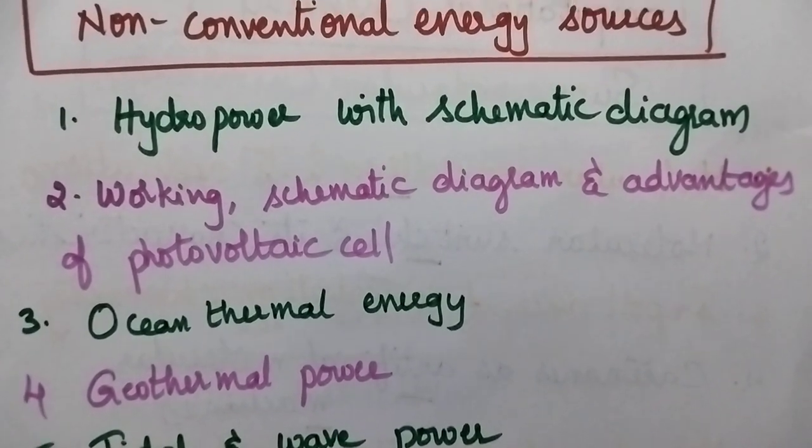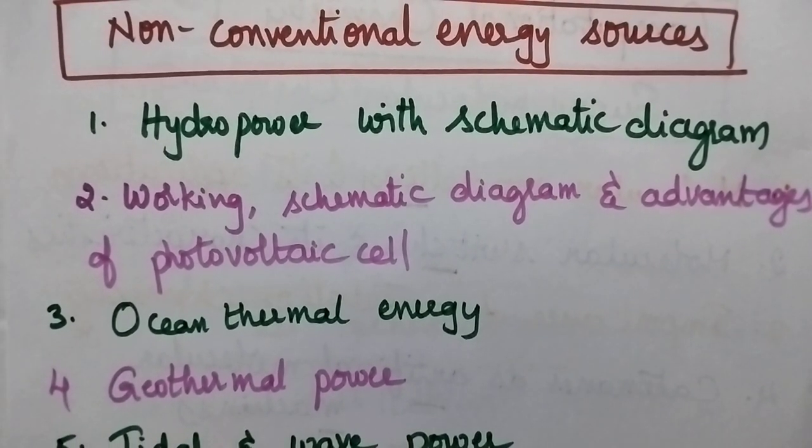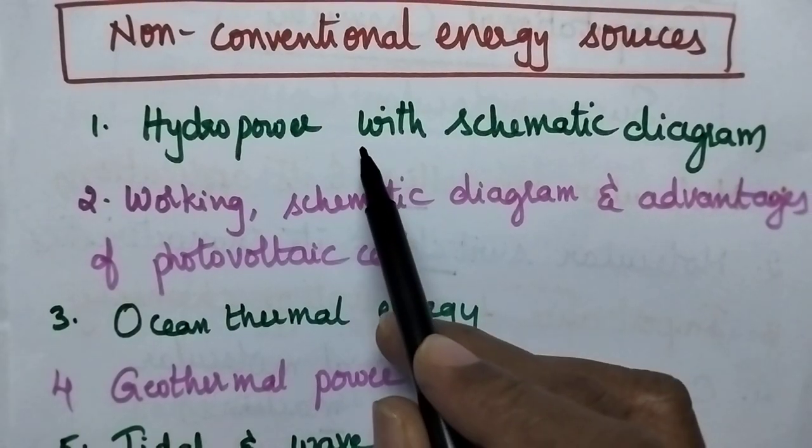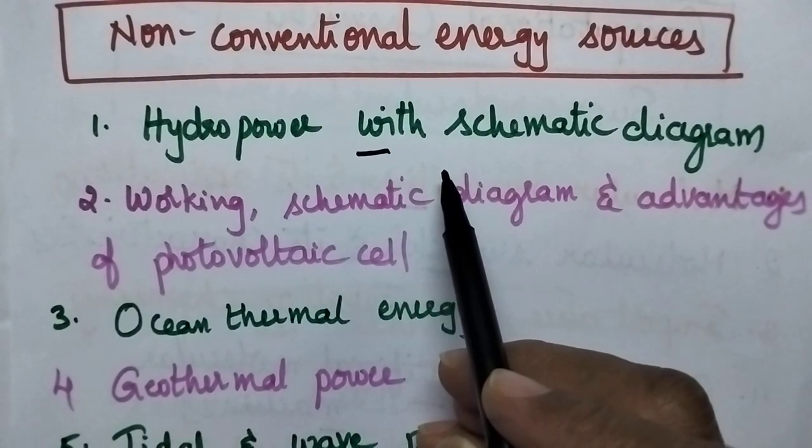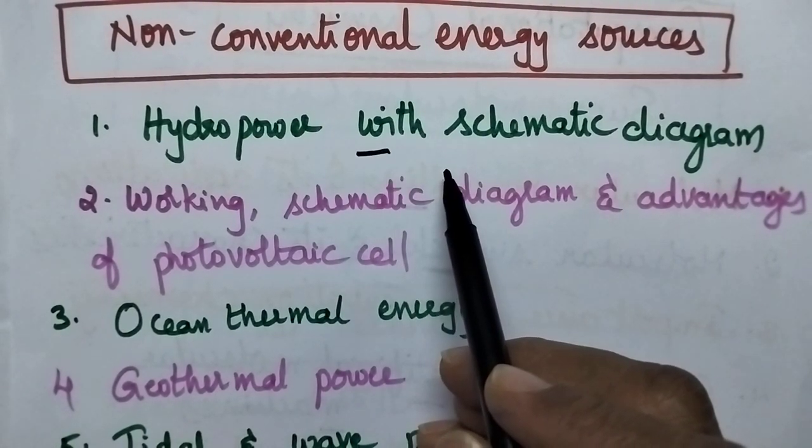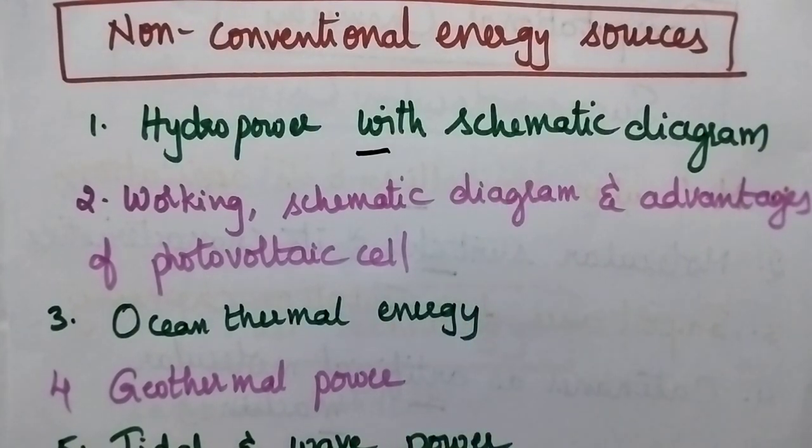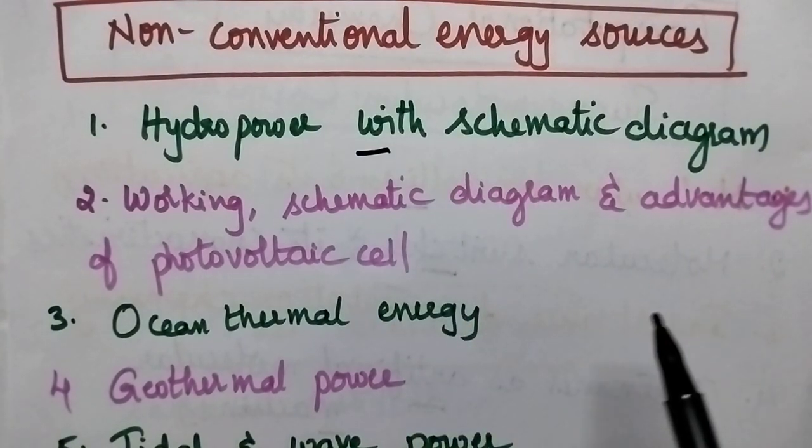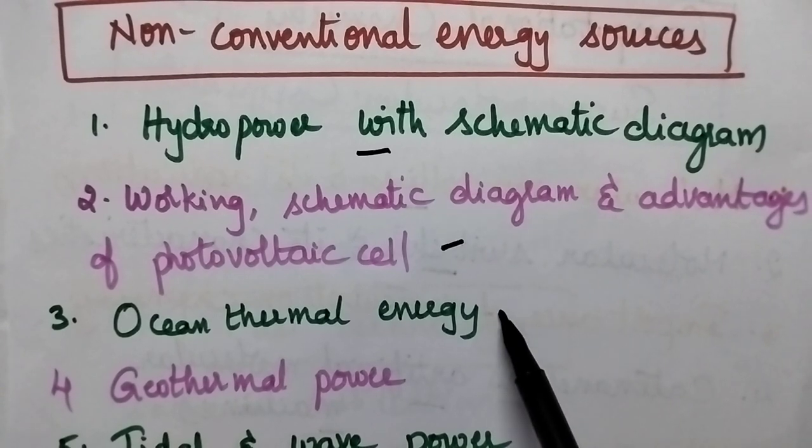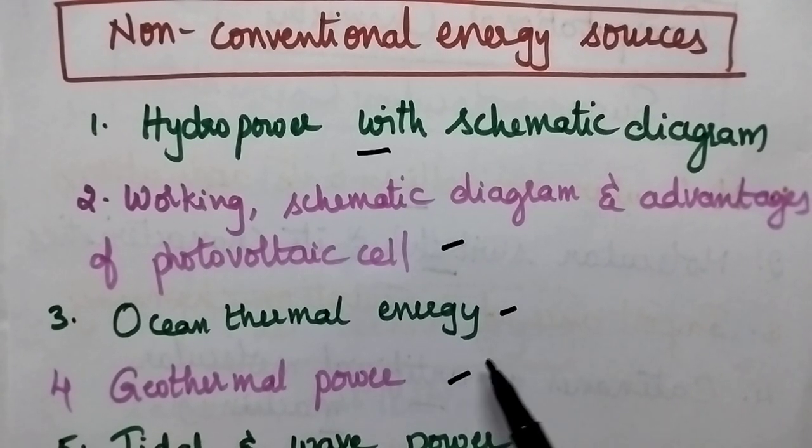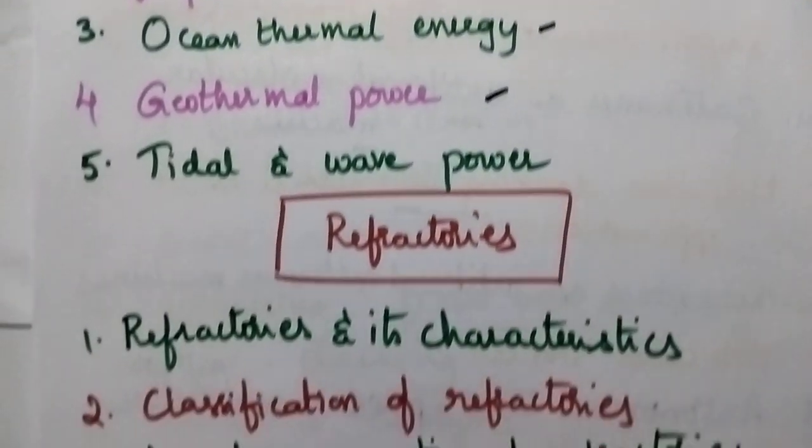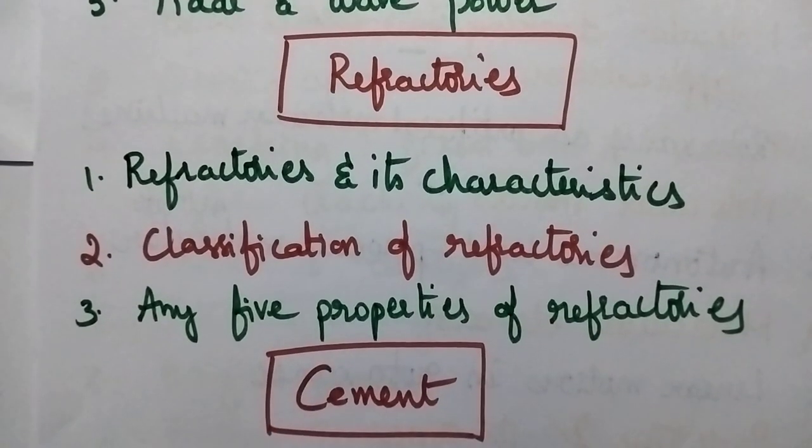Coming to the non-conventional energy sources, it includes hydropower, working advantages of hydropower along with schematic diagram, working schematic diagram and advantages of photovoltaic cell, ocean thermal energy, geothermal energy, tidal and wave power.